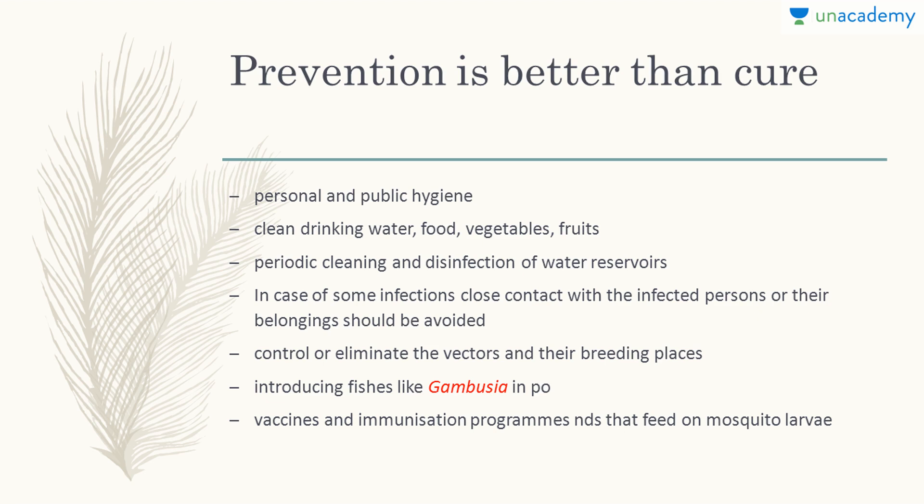Take bath every day, keep your surroundings and home clean, and don't let water stagnate around your home. If mosquitoes are breeding, use sprays, mosquito repellents, or mosquito nets. Fish like Gambusia can be used in ponds as they feed on mosquito larvae. Stagnant water can also be sprayed with oil to cut off oxygen supply so larvae cannot grow. Vaccination and immunization are among the most important prevention methods — vaccines are cheap, easily available, and highly accurate.